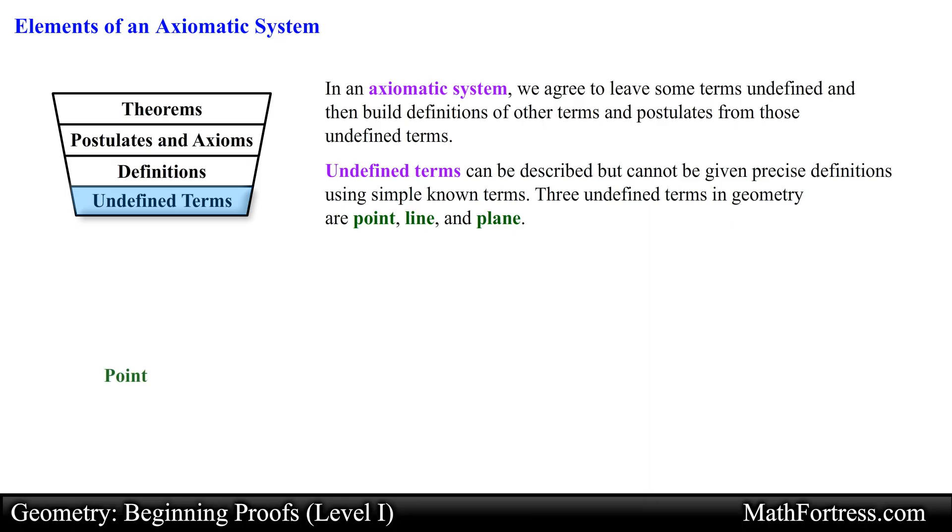Recall that a point is a circular dot that is shrunk until it has no size. A line is formed by an infinite number of points. It also has an infinite length so we denote this idea by using arrowheads. Also a line has no thickness.